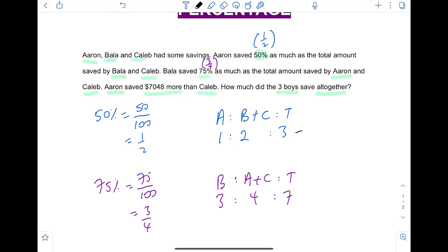Times 7 throughout here. Times 3 throughout here. So, you'll get the top. You'll get 7 is to 14 is to 21. Over here. 9 is to 12 is to 21. Which means very clearly, Aaron has 7 units of money.